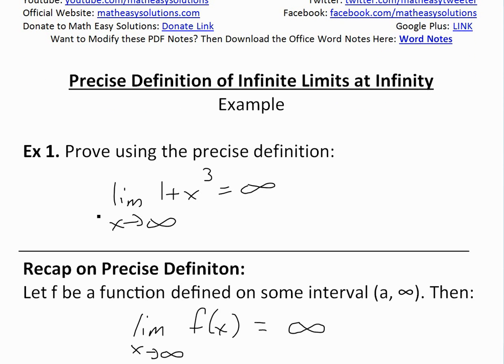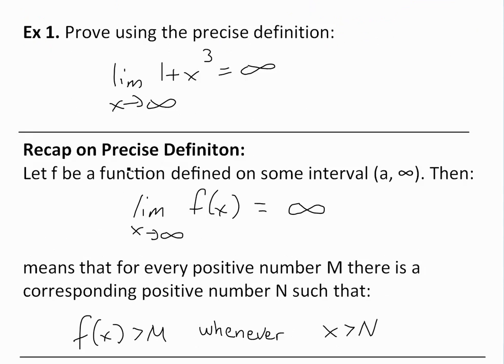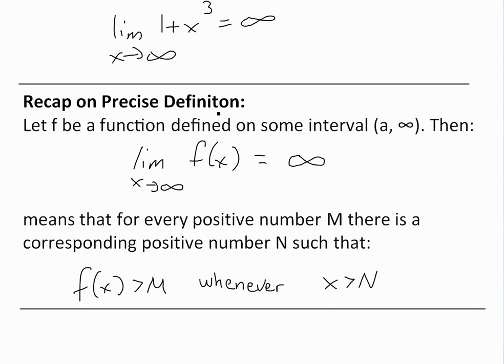Before I get to the proof, I just want to quickly recap the precise definition. I'm not going to go over it in too much detail, but you can see the video link below to get more information. Basically, the definition states: let f be a function defined on some interval from a to infinity.